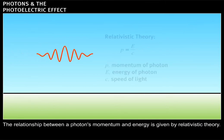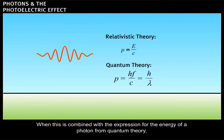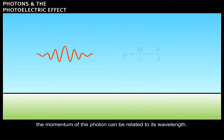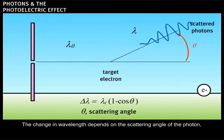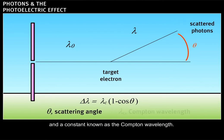The relationship between a photon's momentum and energy is given by relativistic theory. When this is combined with the expression for the energy of a photon from quantum theory, the momentum of the photon can be related to its wavelength. Using this information, Compton derived an equation for the change in wavelength of the scattered photon. The change in wavelength depends on the scattering angle of the photon and a constant known as the Compton wavelength.